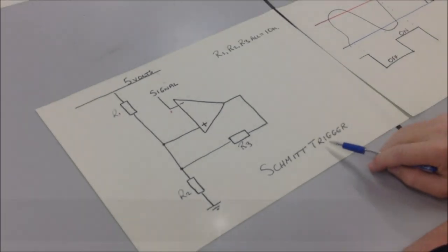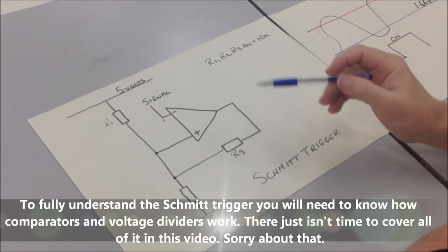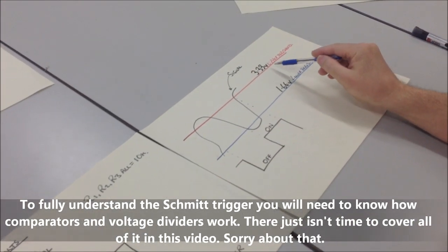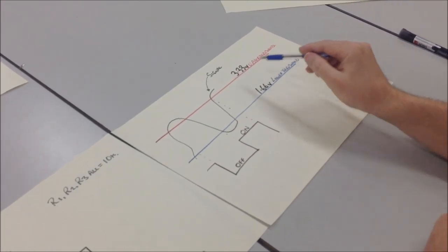We are going to look at a Schmitt Trigger. A Schmitt Trigger is a special type of comparator that has two thresholds: an upper threshold and a lower threshold.